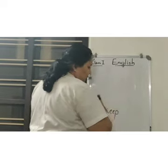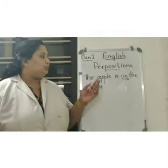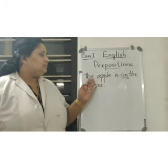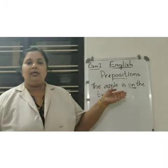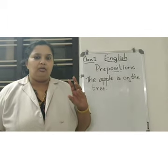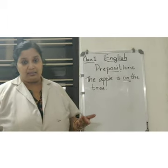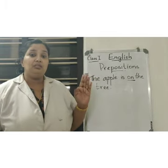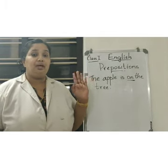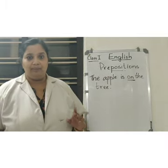Now the next part is the sentence: 'The apple is on the tree.' Here the preposition 'on' shows us where the apple is — it is showing us the position of the apple. Where is the apple? It is on the tree.